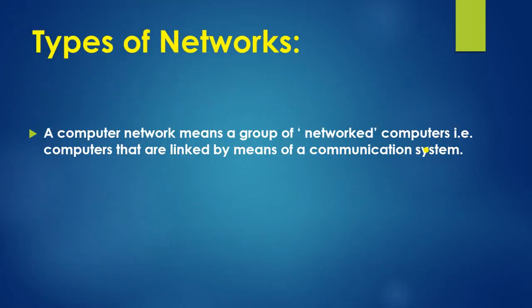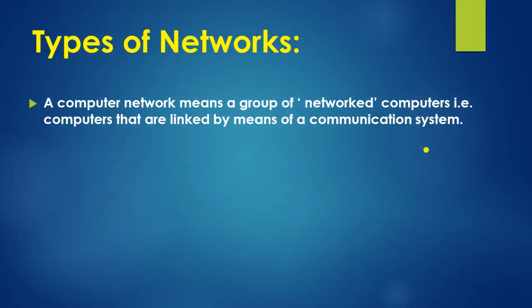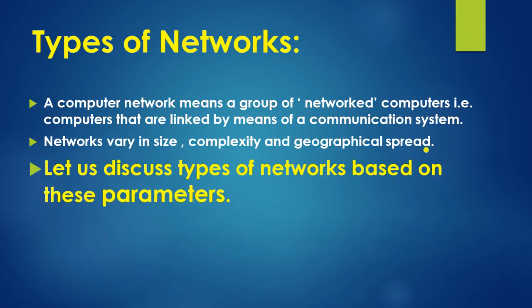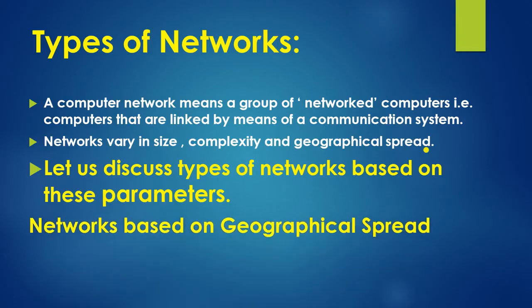Next is types of network. A computer network is a group of networked computers linked by means of a communication system. Networks may differ in size, complexity, and geographical spread. Let us discuss the types of network based on three parameters: size, complexity, and geographical spread.